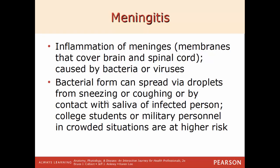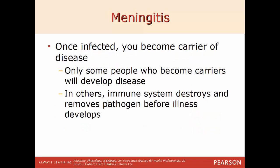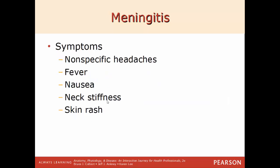Meningitis is the inflammation of the meninges — the membranes covering the brain and spinal cord. It can be caused by a virus or bacteria. The bacterial form can spread via droplets from sneezing or coughing, or contact with infected saliva. Higher-risk groups include military personnel and college students who tend to be in large, crowded situations. Once infected, you become a carrier, but only some carriers develop the disease — the immune system may eliminate the pathogen before symptoms develop.